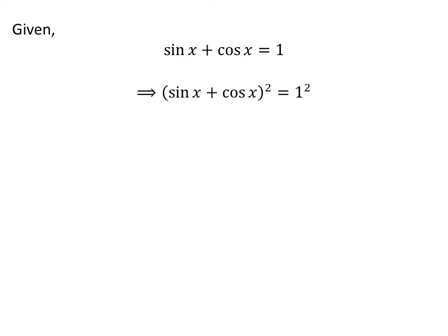Squaring both sides of the above equation gives us: square of (sin of x plus cosine of x) is equal to square of 1. As we know, square of (a plus b) is equal to square of a plus square of b plus 2 times a times b.